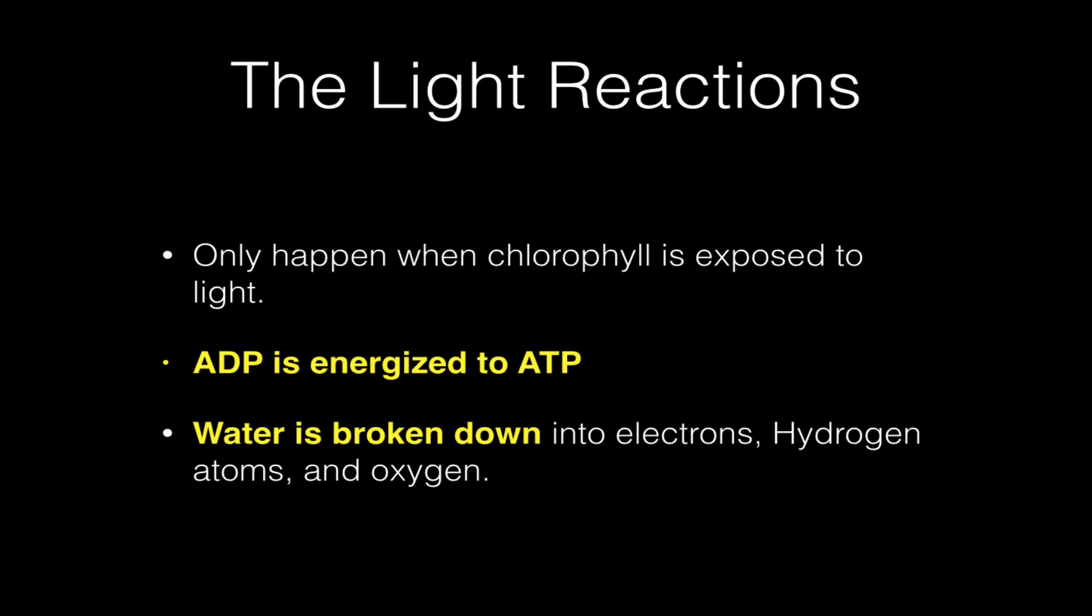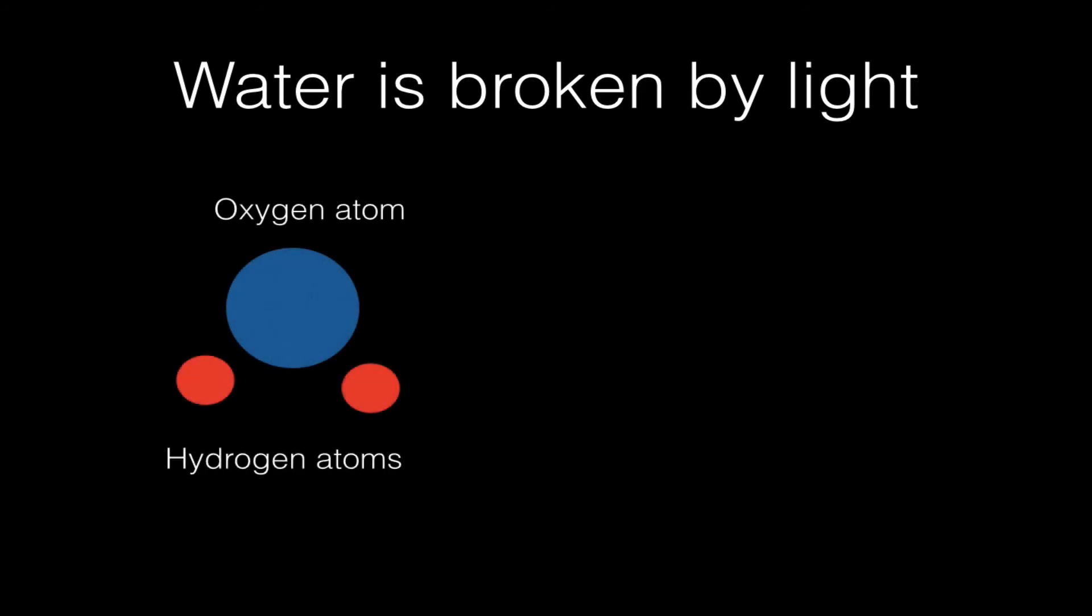Now the light reactions also break water molecules down into electrons, hydrogen atoms, and oxygen. And this is a good place to review exactly what a water molecule looks like. So we're going to start with an oxygen atom and we're going to attach to it two hydrogen atoms to give us the H2O formula. Now these hydrogen atoms are held to the oxygen by pairs of electrons.